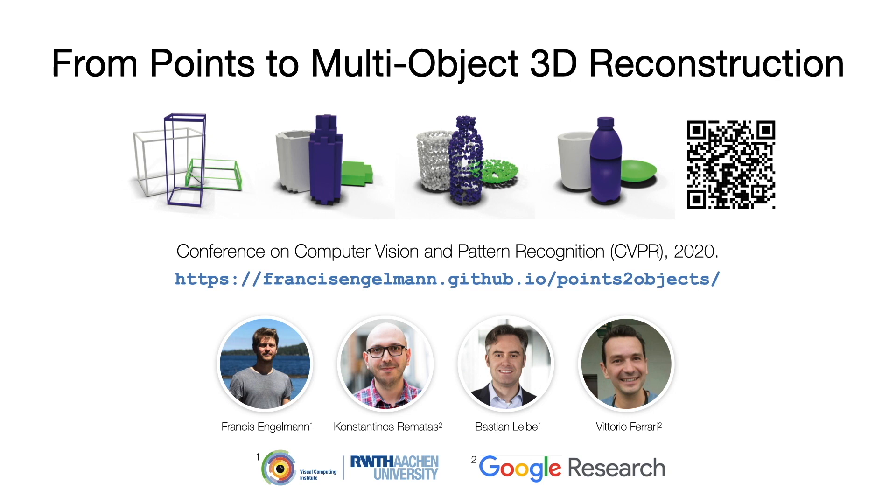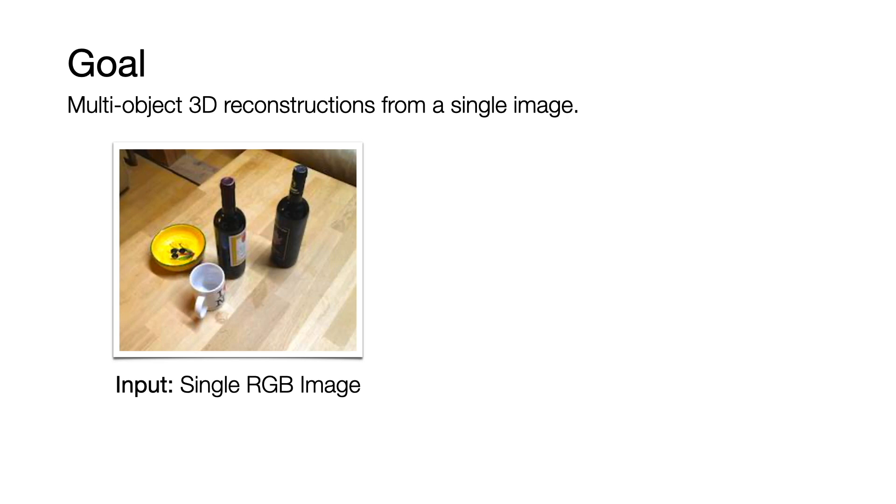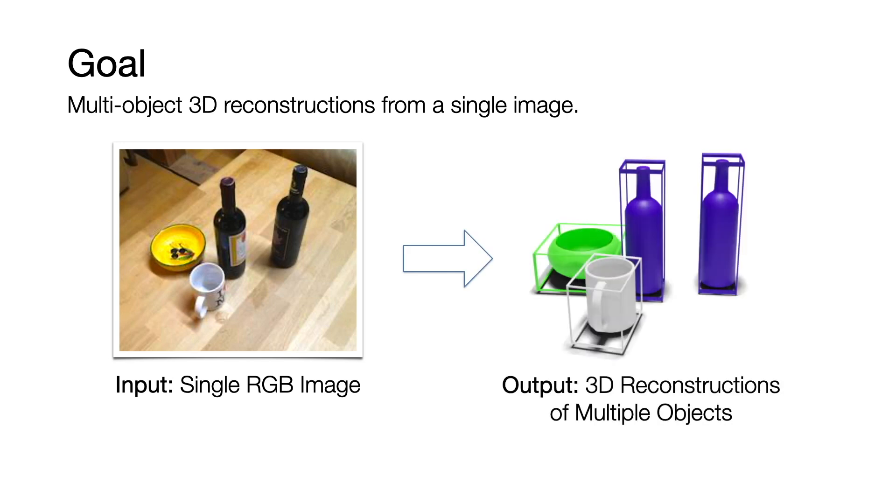In this talk we will describe an approach for detecting and reconstructing multiple 3D objects from a single input image. Specifically, the goal of this work is to perform 3D reconstruction of all the objects in a given scene from a single RGB image.